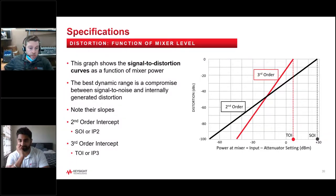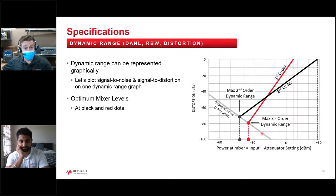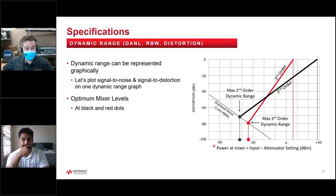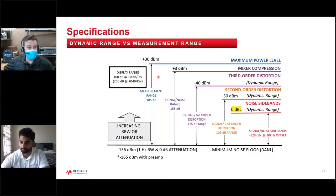This shows the optimum settings for your spectrum analyzer as a receiver. Your displayed average noise level governs the low end of your measurement, and your third order intercept governs the high end. So you want to be in the sweet spot in terms of power input at the mixer and your distortion level. Putting it all together, increasing the resolution bandwidth affects all components — your maximum level, mixer compression, third order distortion — and they all affect your dynamic range.